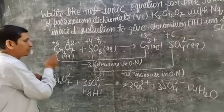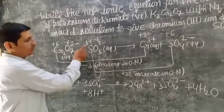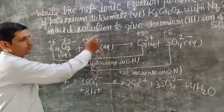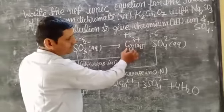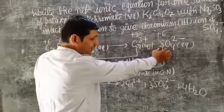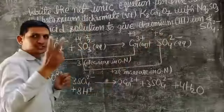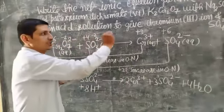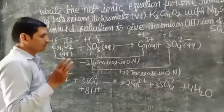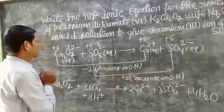The oxidation number of chromium is +6, oxygen is −2, and sulfur is +4 on the reactant side. On the product side, chromium has a charge of +3, so the oxidation number of chromium is +3. In sulfate ion SO₄²⁻, the oxidation number of sulfur is +6. Step 3 — calculate the increase and decrease in oxidation number.